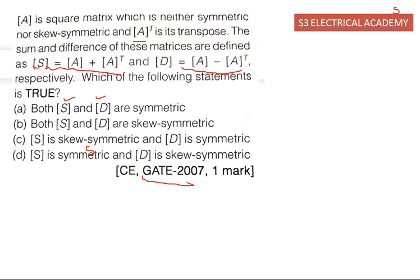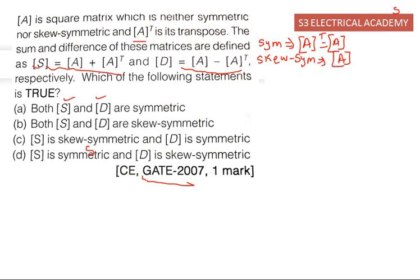What is the condition for symmetric as well as skew-symmetric? If a matrix is symmetric, then A-transpose should be equal to A. If a matrix is skew-symmetric, then A-transpose is equal to minus A.